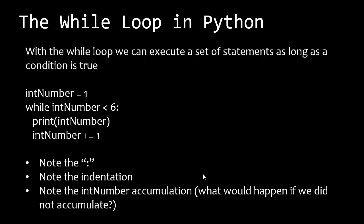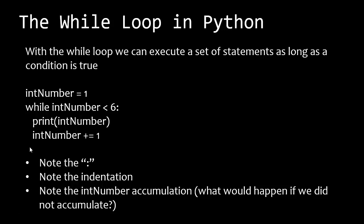In Python, there are two different types of loops. The first one is a while loop. With the while loop, we can execute a set of statements as long as a condition is true. So in this case, we have int number equals one, and while int number is less than six, we're going to print the int number. We'll print one, then we'll increment it, and then we'll loop back up. Note the colon at the end of while, very similar to the if statements. Note the indentation — everything that's indented is part of the loop. If the next statement is not indented, it won't be part of the loop.